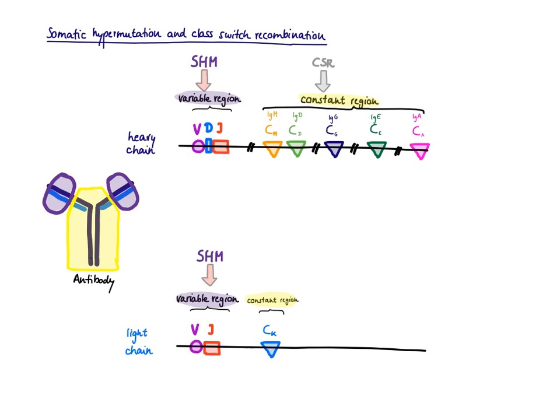The consequence of this hypermutation is that it changes the affinity of the antibody. This is very important because you want to make an antibody that holds on strongly to an antigen, otherwise it's going to fall off and cannot exert its function.